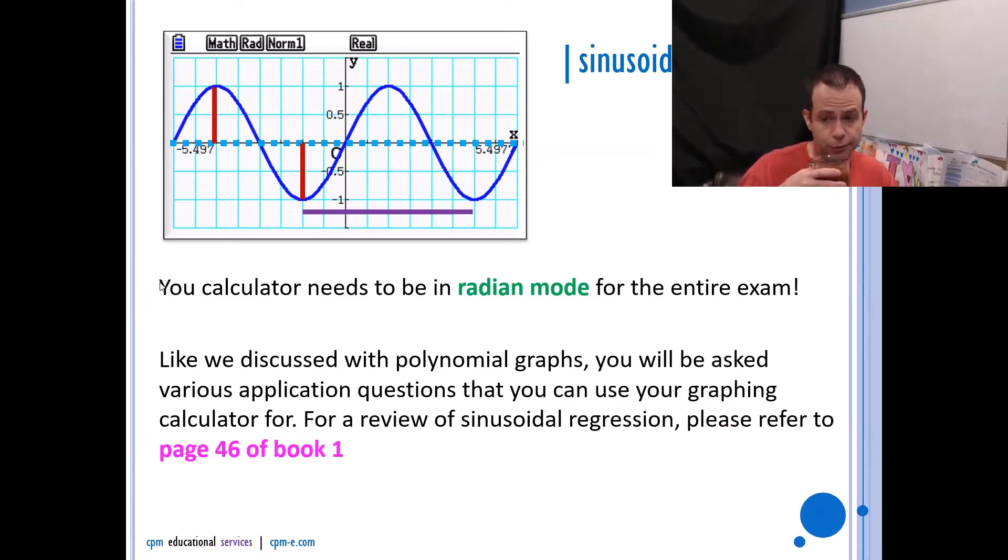To review sinusoidal regression, it's the same as polynomial regression. It's just that you choose the sinusoidal one instead of the quadratic or the linear or whatever. But again, all of those steps are written on page 46 of book one for you.